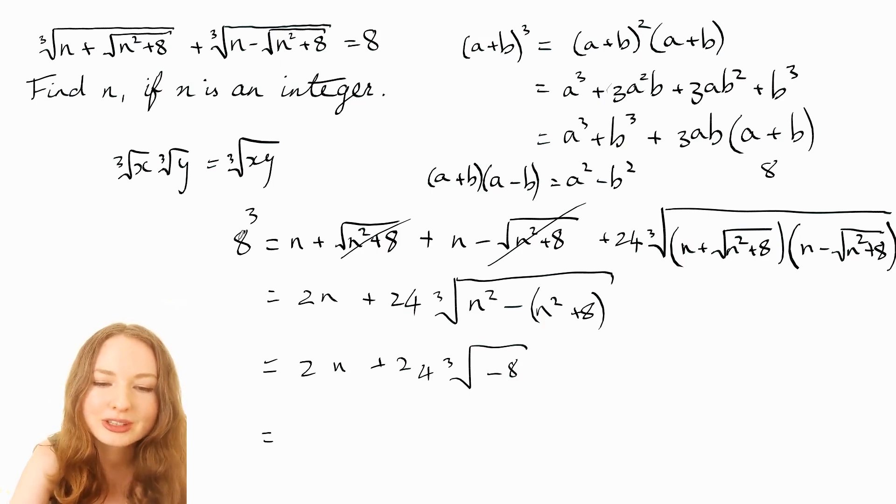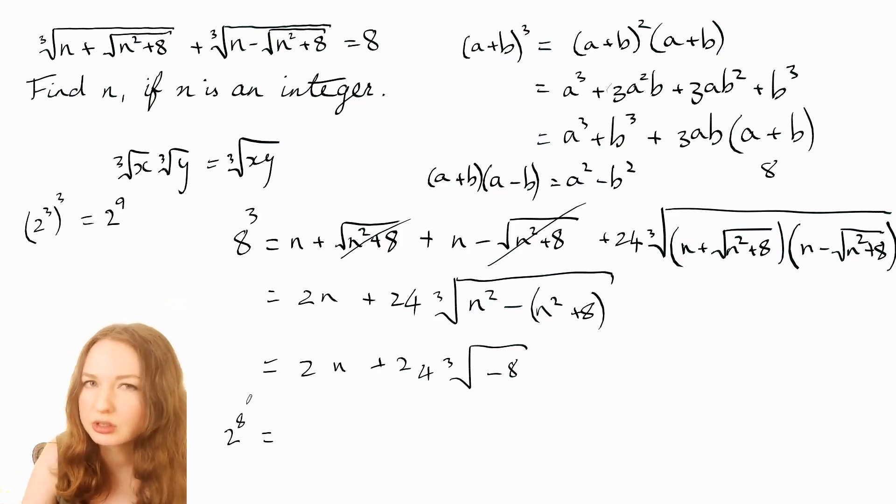personally what I would do is think of the 8 as being 2³. So you've got (2³)³ which is 2⁹ and then if we're dividing that by 2 we're going to have 2⁸ which I happen to know is 256 because I know my powers of 2.